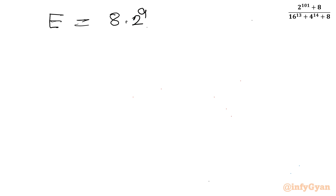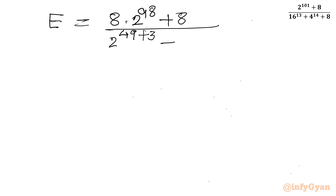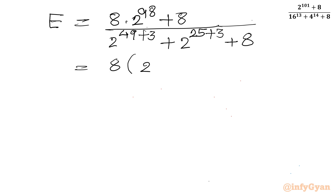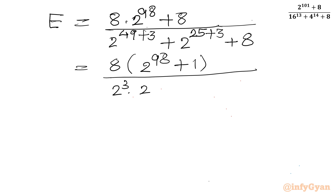So the expression E equals 8 times 2 raised to the power 98, plus 8, divided by 2 power 52 plus 2 power 28 plus 8. Now I write 52 as 49 plus 3, so the denominator becomes 2 power (49 + 3) plus 2 power 28 plus 8.